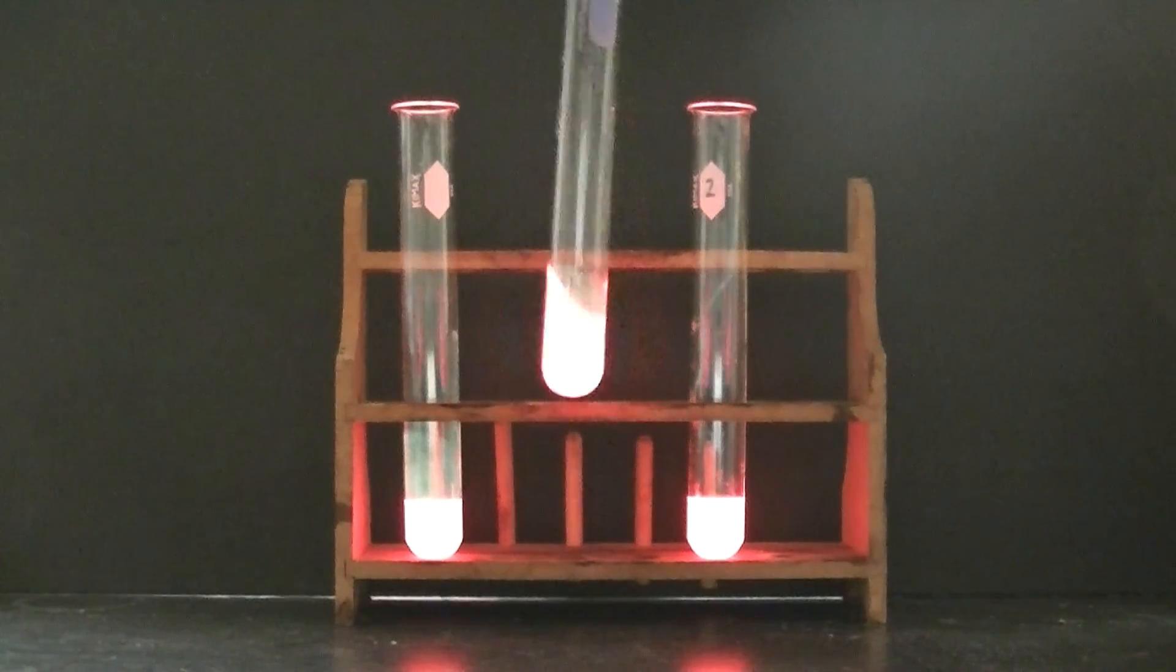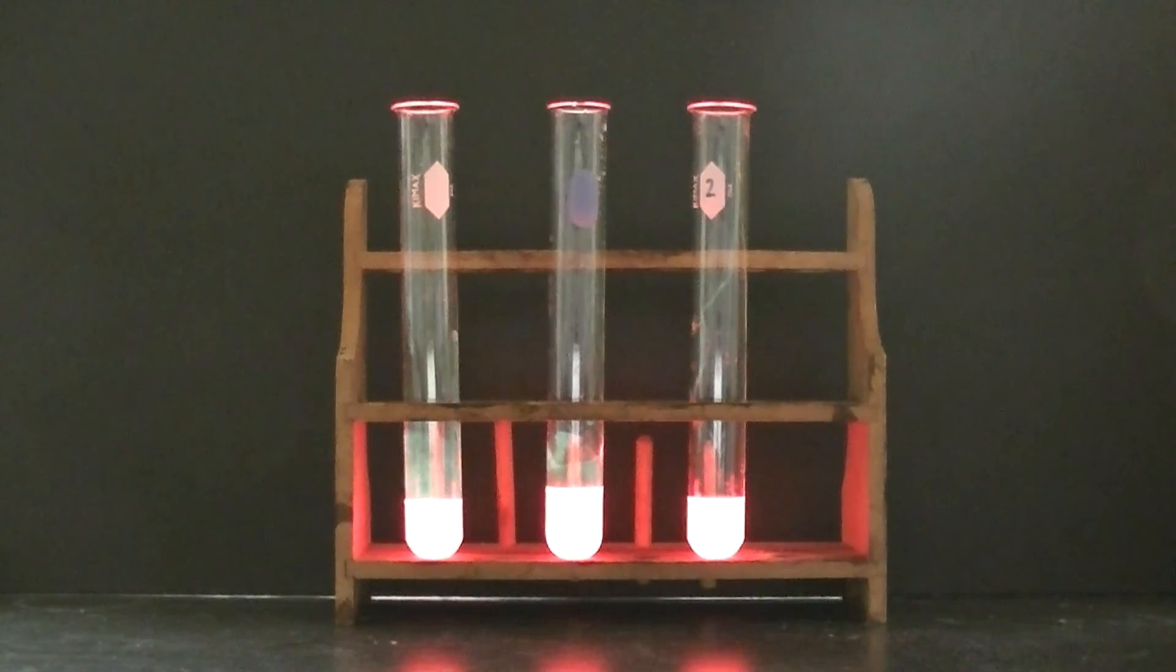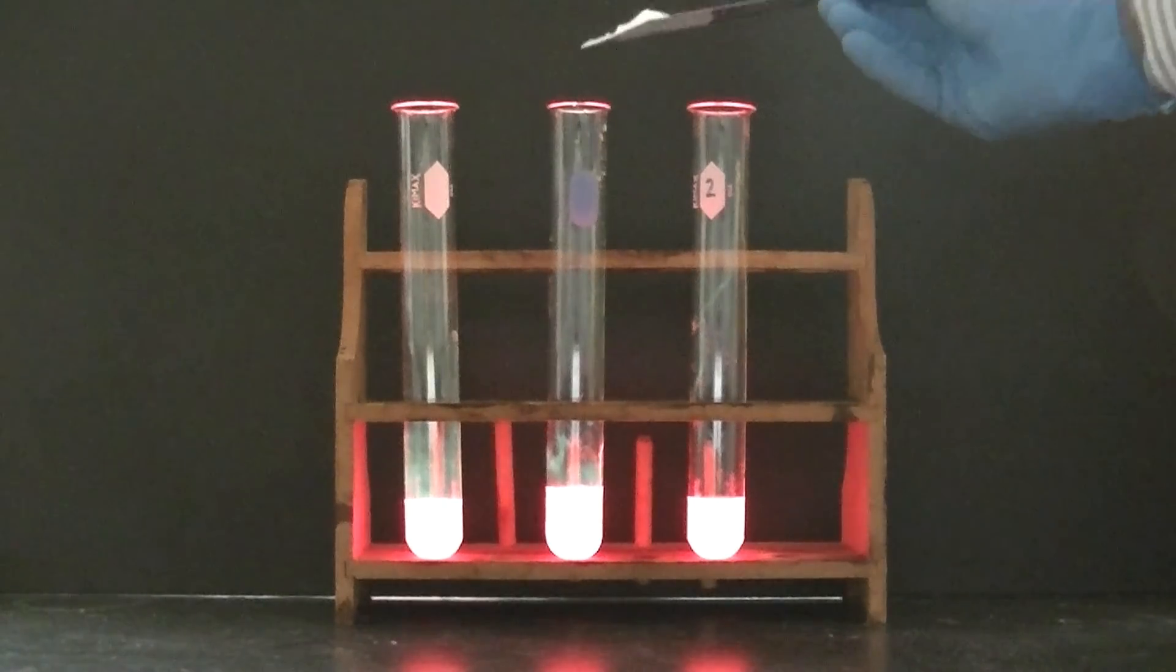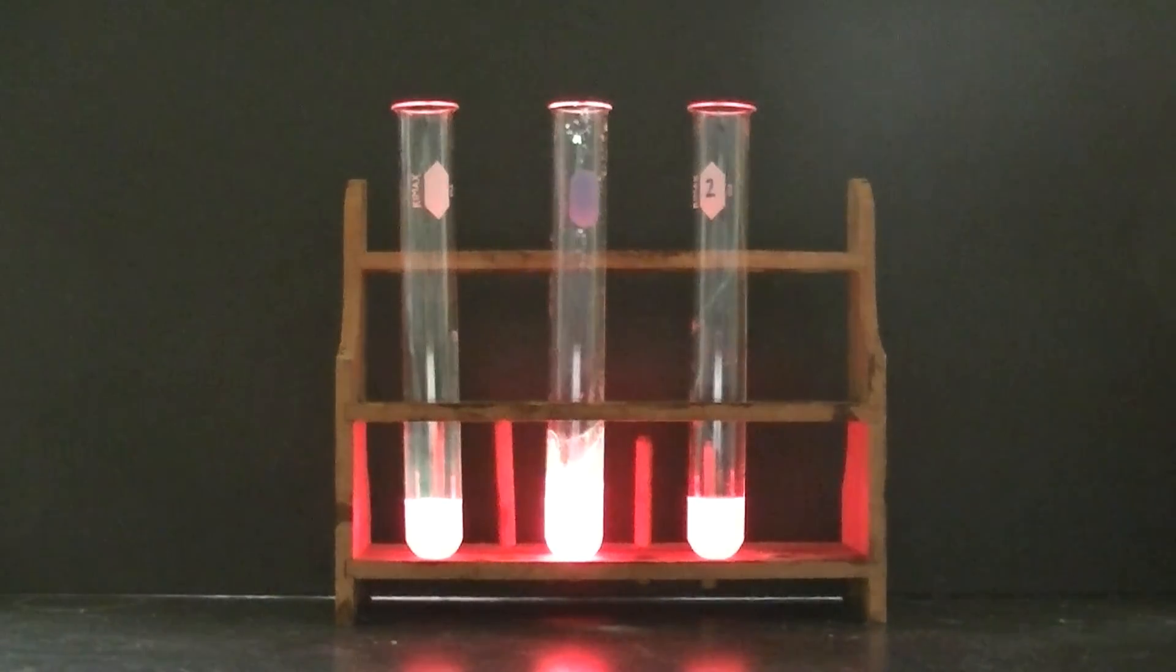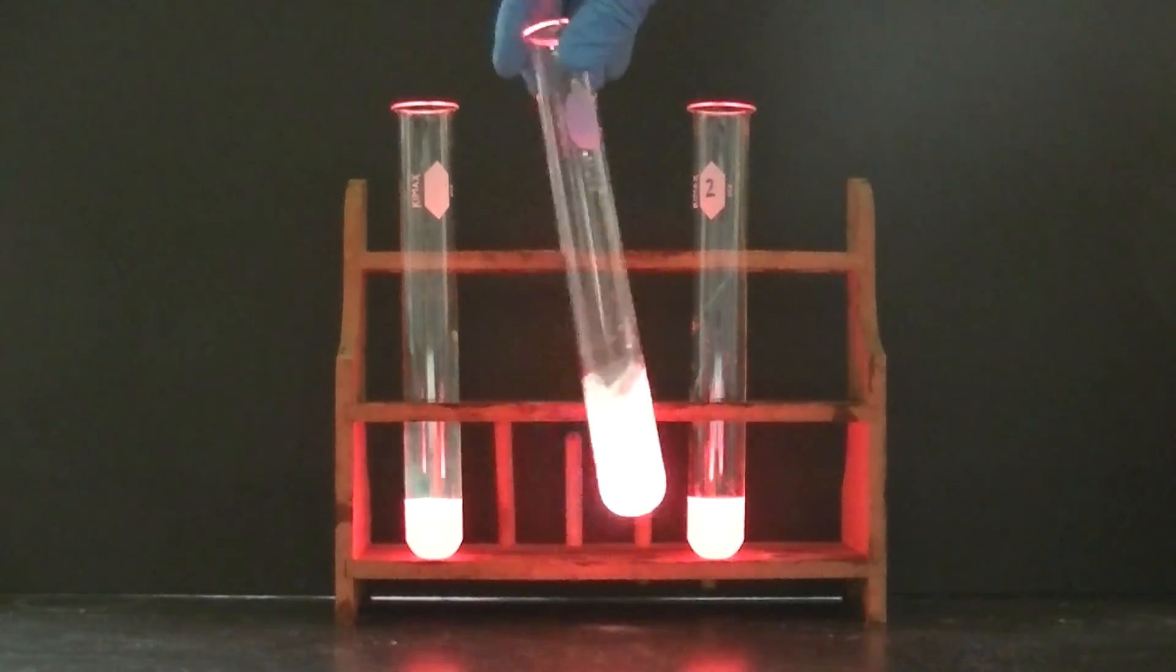To our middle test tube here, I'm going to add a base that's easily found around the home. I'm using baking soda, also known as sodium bicarbonate. Sodium bicarbonate is the chemical name of baking soda. I'm going to add some baking soda from a scoopula and see what happens. Give that a swirl.